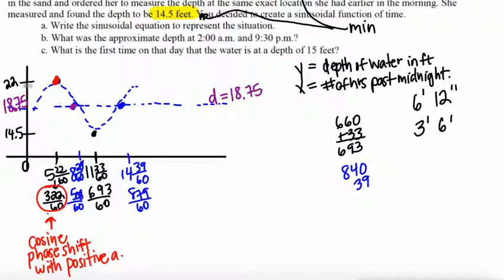So my equation has a cosine function versus the sine function. Now I need to find the amplitude. The amplitude is the distance between the midline and the maximum. The amplitude here is 3.25. So we've got A equals 3.25, we've got D equals 18.75.